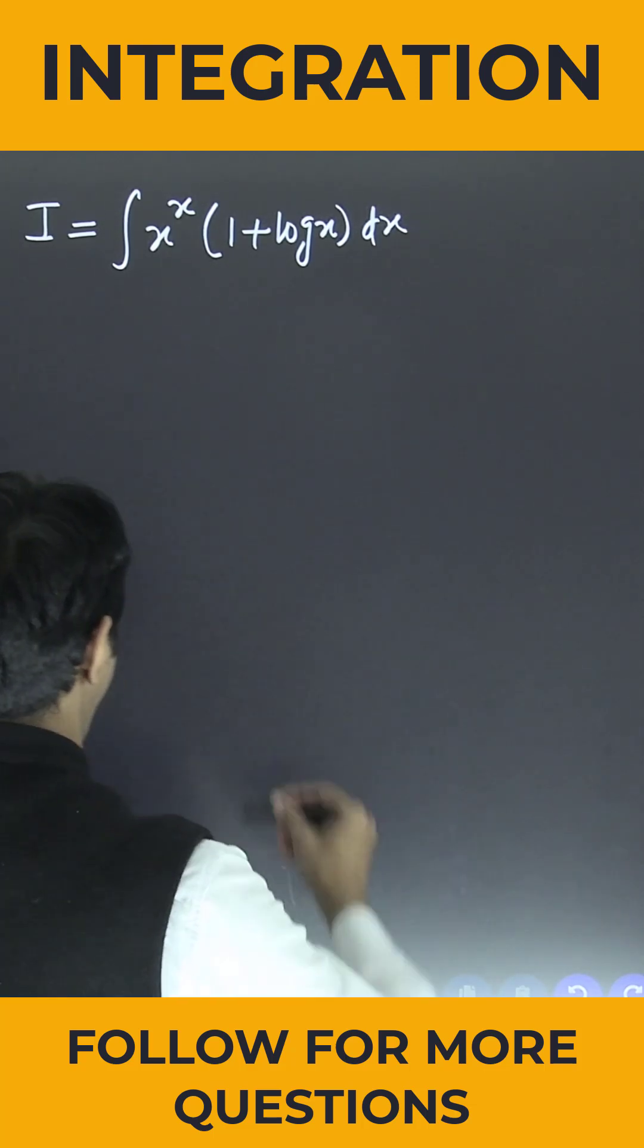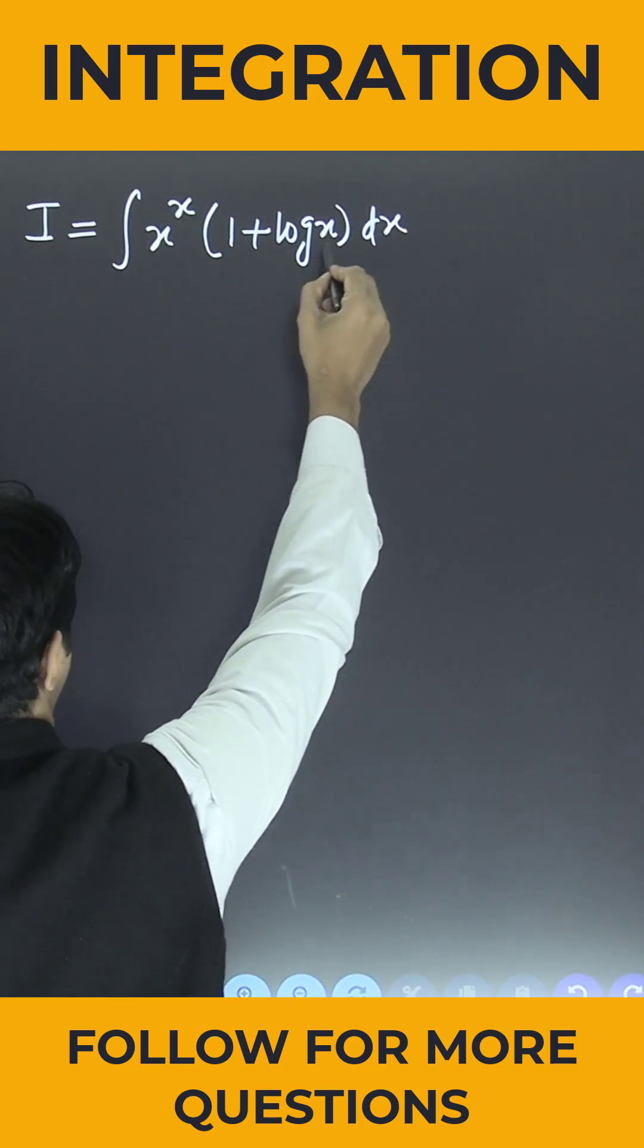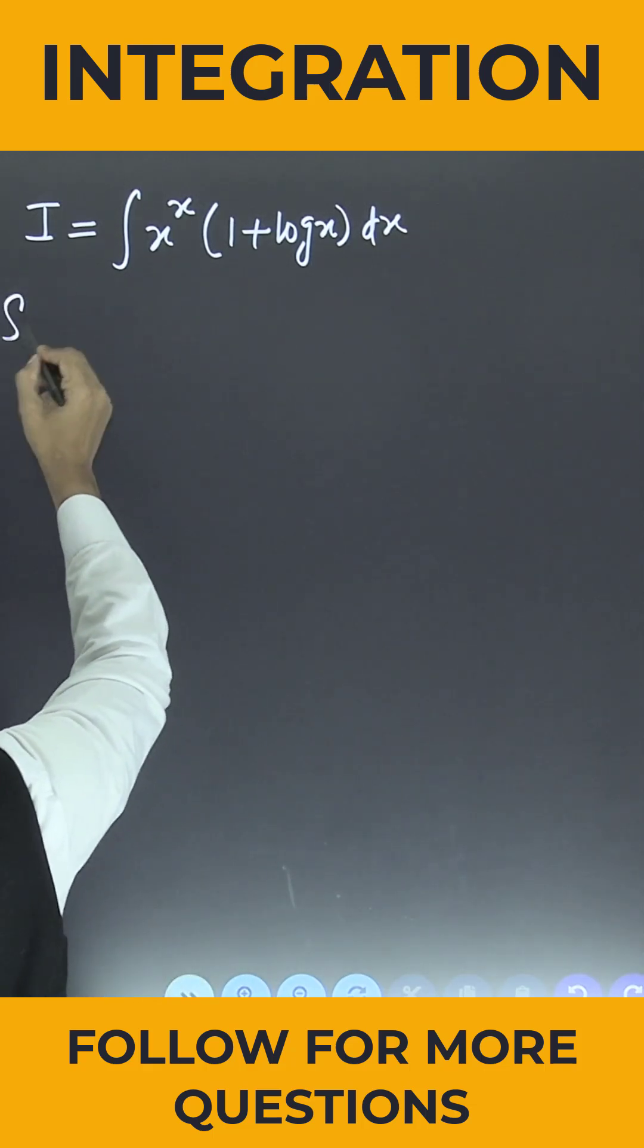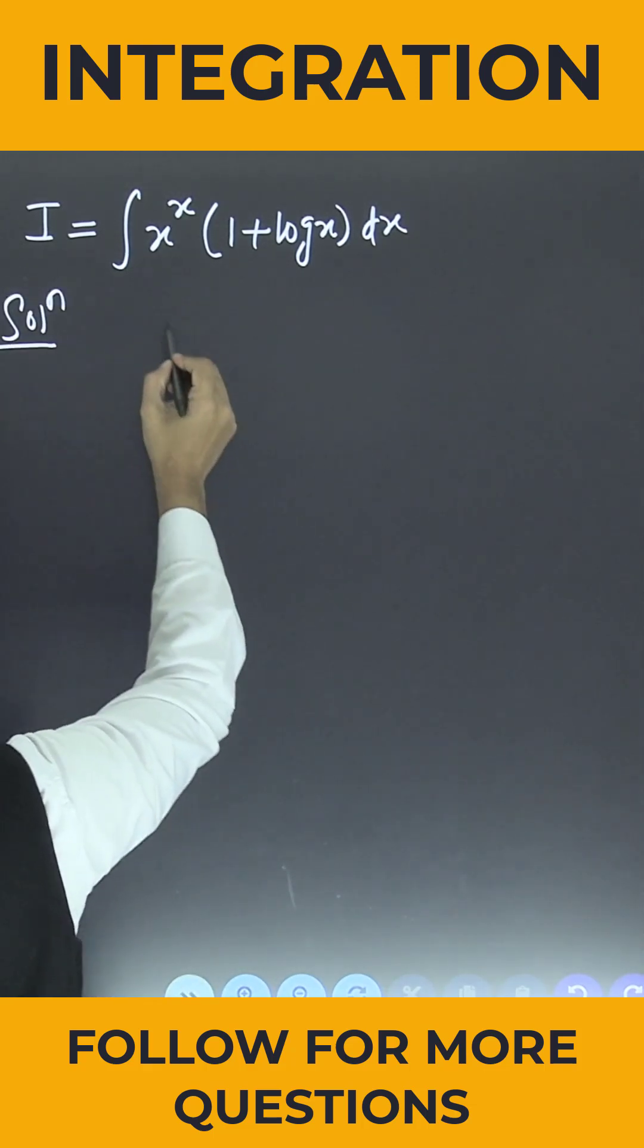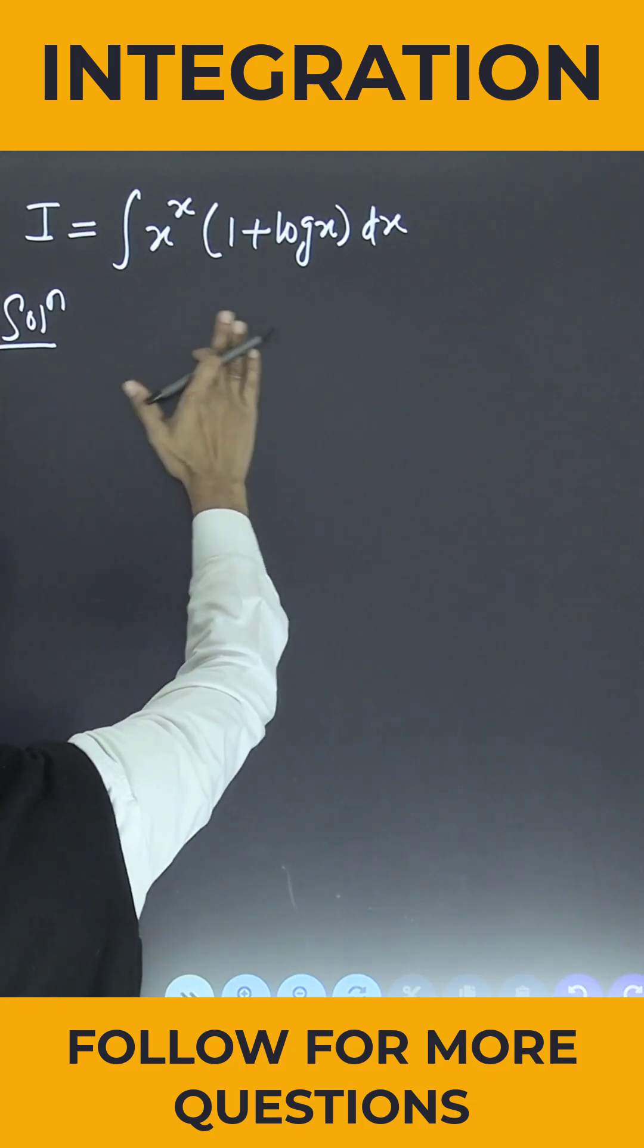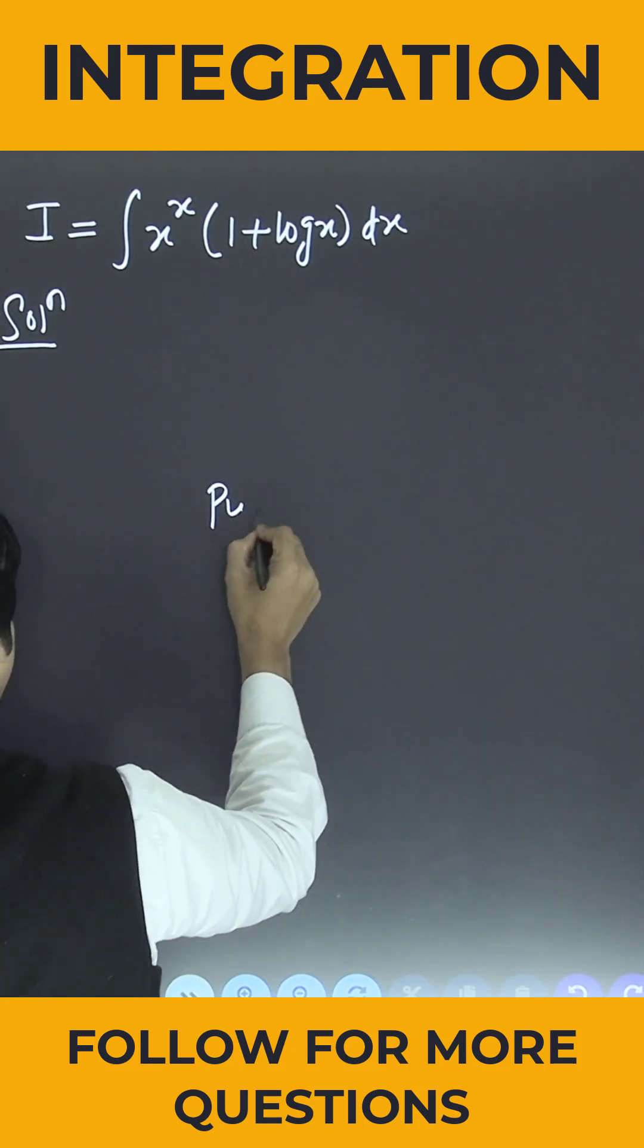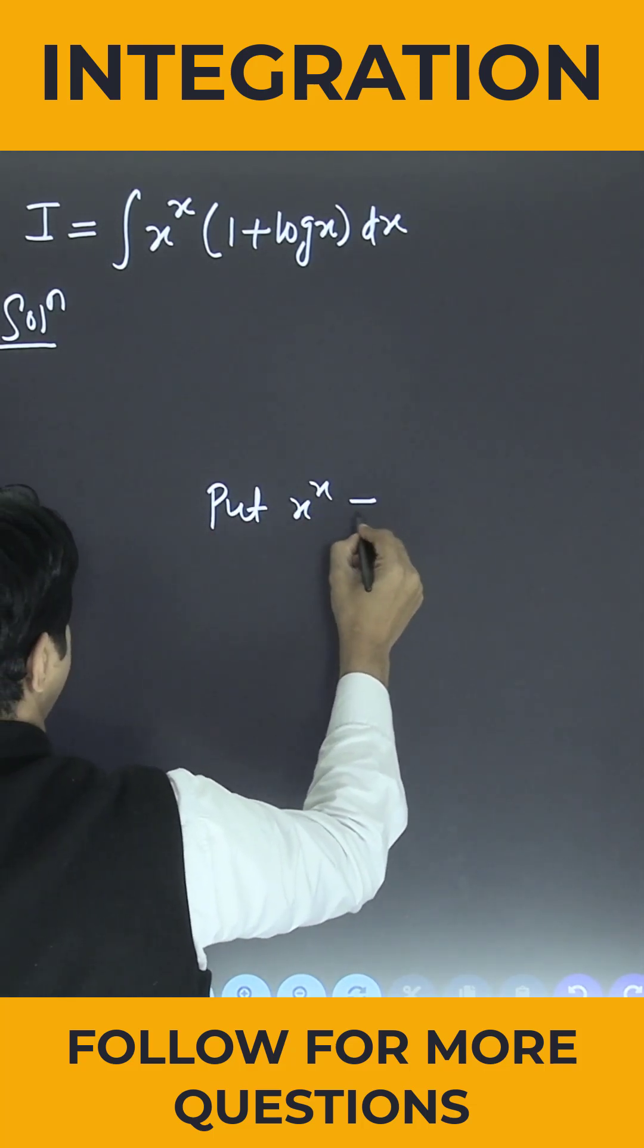One integral is given to us: x to the power x times 1 plus log x dx. Now how we can start the problem? Simply put x to the power x is equal to small t.